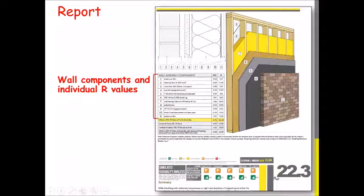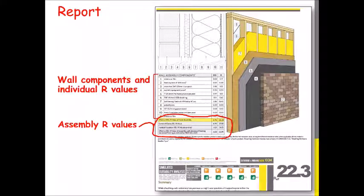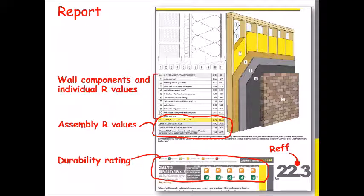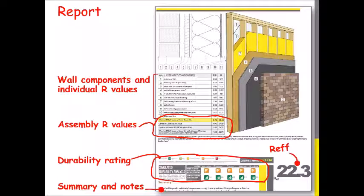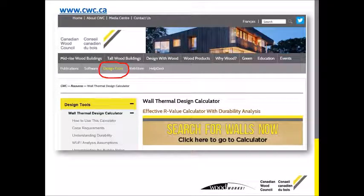Once you get there and fill in the information, which I'll go through shortly, you'll get a report. The report focuses on wall components and individual R-values, assembly R-values. The effective R-value is shown in the big font on the bottom right. There's also a durability rating shown in two lines of color, which I'll explain shortly. You get there by going to CWC.ca and selecting the design tools.